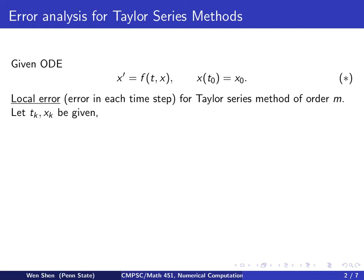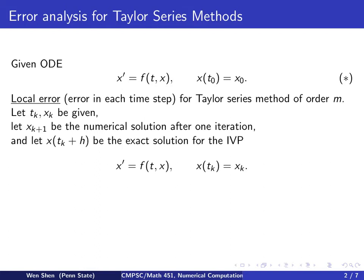So let's have the initial data for the step, say tₖ, xₖ, be given. And we want to compute the value at xₖ₊₁. So let's say xₖ₊₁ will be the numerical solution after one iteration. Also, we denote x as a function of t at tₖ + h shall be the exact solution for this initial value problem.